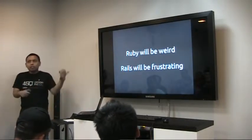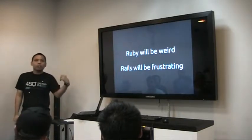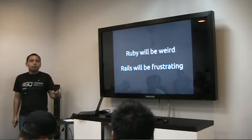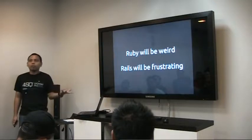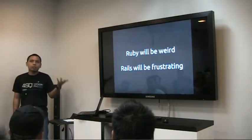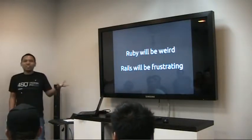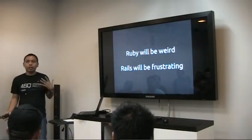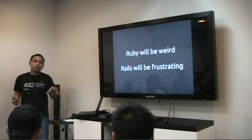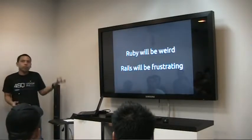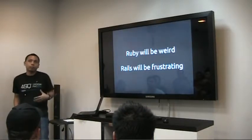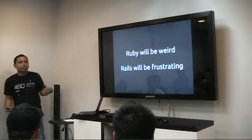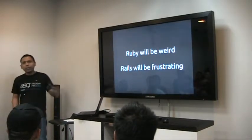I had a discussion this Saturday with a guy who didn't understand the point of not having static typing — because he was working in environments with IDEs, compiler warnings, and errors, he couldn't understand how a person can be productive without static typing to protect them. So yeah, Ruby will be weird coming from that background.